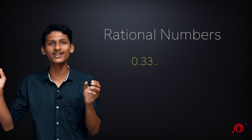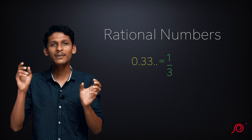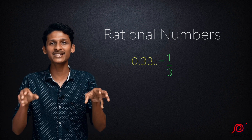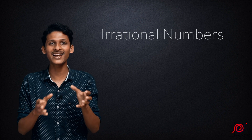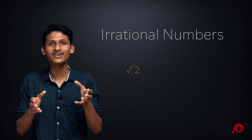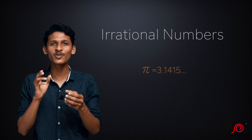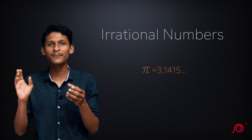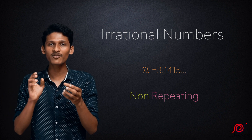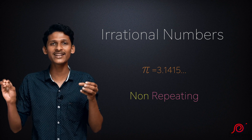Now let's look at 0.3333... — that is 0.333 repeating. This equals 1 by 3, so it is a rational number. Numbers that cannot be expressed in P by Q form are irrational numbers. Examples are root 2, pi, and root 3 — these are irrational numbers. Pi is 3.1415... and its decimal digits do not repeat in a pattern. Since 3.1415... goes on without repeating, it is a non-terminating, non-repeating decimal, and therefore an irrational number.